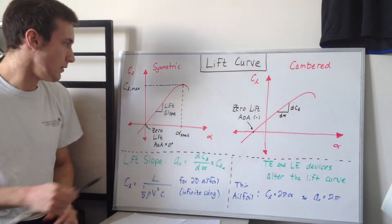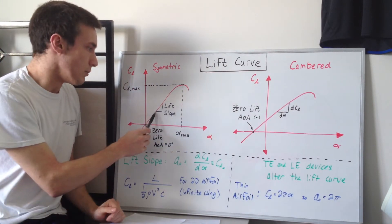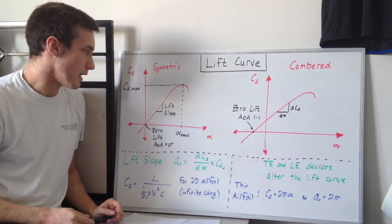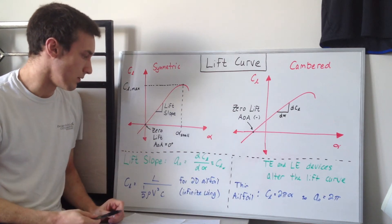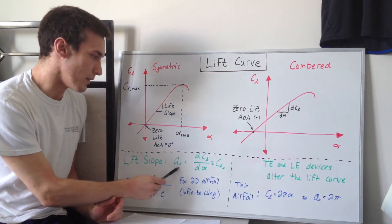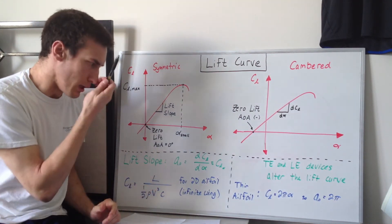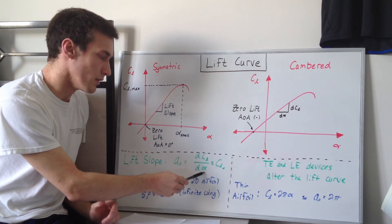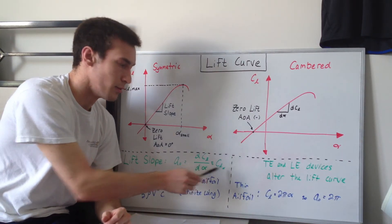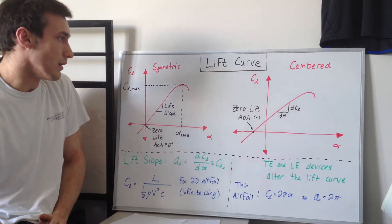If you look at the lift slope in this linear region, you can define a lift slope by taking the rise over the run — the lift coefficient over the angle of attack — and that gives you your lift slope. For 2D airfoils, it's defined as A sub zero, at least as defined in Anderson and a couple of websites. It's really just the change in lift coefficient over the change in angle of attack. In flight dynamics it's also called C sub L sub alpha, pronounced CL alpha.